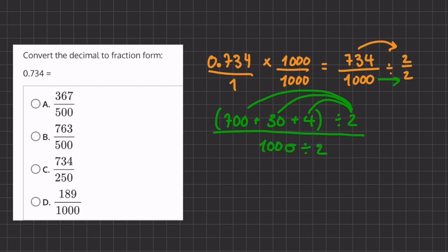Okay, so now let's start our division. 700 divided by 2 is 350, and we'll add that to 30 divided by 2, which is 15, and 4 divided by 2, which is 2.